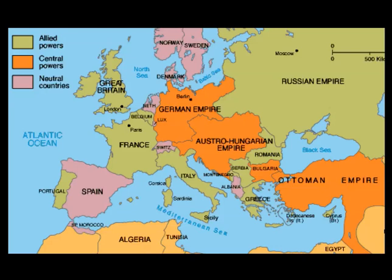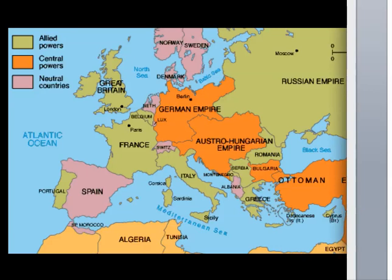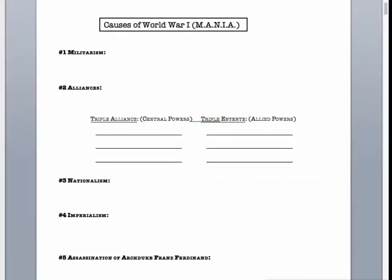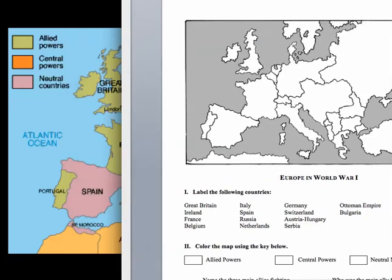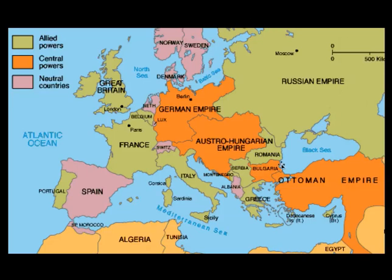Let's take a moment to complete the map, which is another handout. You should have a map with some countries to label, and then we'll shade in, with colored pencils, crayons, or highlighters, the Allied Powers, the Central Powers, and the Neutral Nations. If you take a look at this map, you might want to pause the video right here. Everything that you're asked to label is here, with possibly the exception of Ireland. Ireland is right here where you see my mouse.